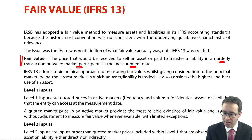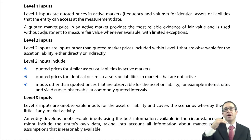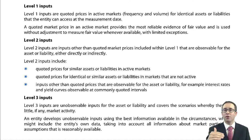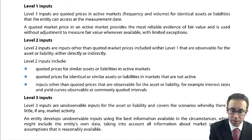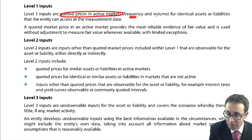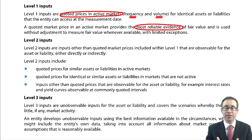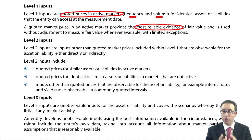IFRS 13 adopts a hierarchical approach, looking at specific markets. In terms of Level 1 inputs, we take quoted prices in an active market. So if you have shares traded in an active market — where there need to be regular transfers and large volumes of transfers going on — and that asset or liability is identical, you will use that quoted price in an active market. The reason is that it gives the most reliable evidence. If it's a fair market, that quoted price should be the most reliable evidence, and so it shouldn't require any adjustments.